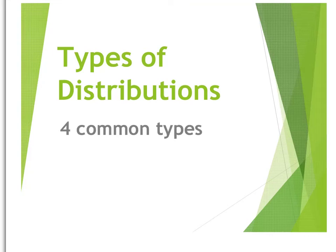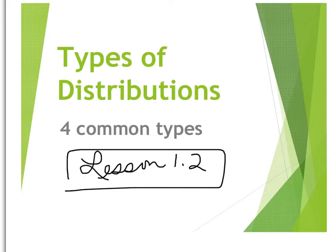This is the second lesson video in Unit 1 for AP Statistics. In this video we'll be talking about types of distribution as well as how to describe a graphical display.